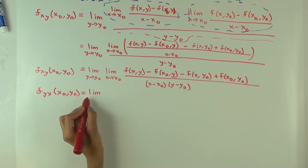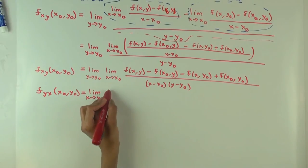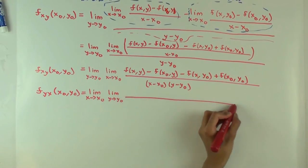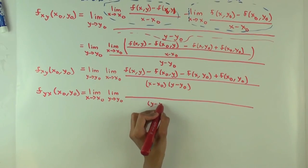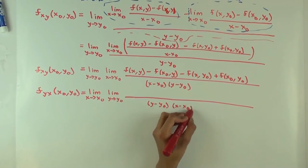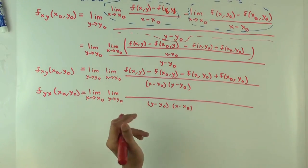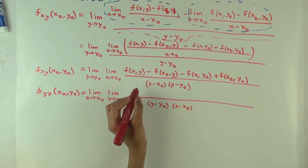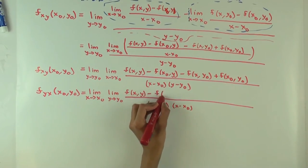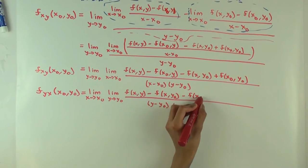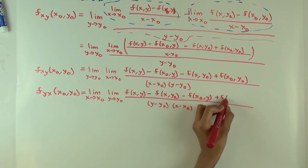Okay. So, what should you get? You get limit as X approaches x naught. Limit as Y approaches y naught. So, the denominator becomes y minus y naught times x minus x naught. By the way, in the arguments of f, x and y won't get flipped around. So, x will still be the first one and y will still be the second one. But the rest will. So, you get f of x comma y minus f of x comma y naught minus f of x naught comma y plus f of x naught y naught.